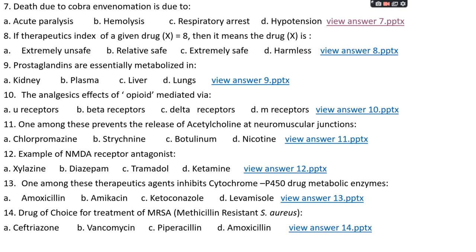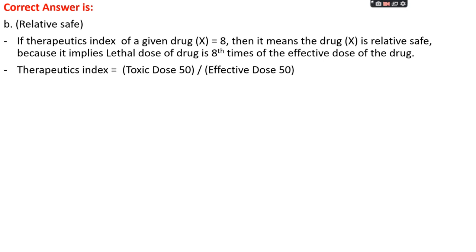Question number eight: if the therapeutic index of a given drug is eight, it means the drug is — option A: extremely unsafe, option B: relatively safe, option C: extremely safe, or option D: harmless. The right answer is option B, relatively safe. A therapeutic index value of eight means the drug is relatively safe because the lethal dose is eight times greater than the effective dose. The therapeutic index is the ratio of the toxic dose 50 to the effective dose 50.